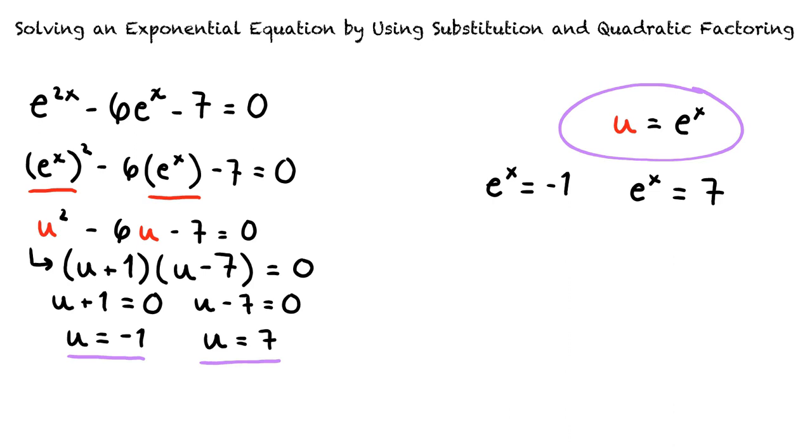Our final step is to solve each of these for x. We can do this by rewriting these equations in logarithmic form. x equals the natural log of negative 1 or x equals the natural log of 7. It is important to note that the logarithm of a negative number is not defined. Therefore, x equals the natural log of negative 1 is not one of our solutions. Knowing this, we can write that our final solution is x equals the natural log of 7, which is equivalent to approximately 1.95.